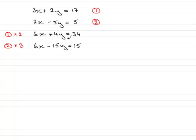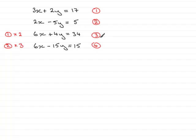So I now have two new equations, and I need to number these as equations 3 and 4. What you'll notice in equations 3 and 4 is that the x terms are exactly the same — both 6x. So when we have two terms that are exactly the same, we can eliminate that term — the 6x in this case — from both equations by doing subtraction, by subtracting equation 4 from equation 3.